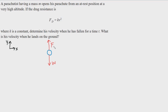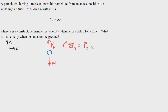So FD is going upward and follows the given equation. Now all we have to do is sum the forces in the positive Y direction, because there's no movement in the X direction — we're assuming the parachutist is falling straight downward. So the sum of the forces in the Y direction equals FD minus W, and that equals mass M times acceleration A in the Y direction.